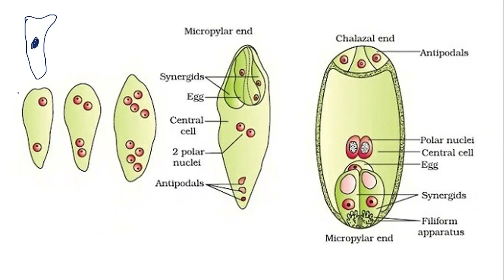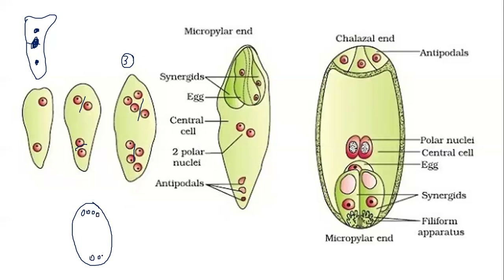Only one cell out of 4 becomes functional. That cell undergoes mitosis to form 2 cells, then divides again to form 4, then 4 divides to form 8. If this is the embryo sac, there will be 4 cells in the micropylar region and 4 cells in the chalazal region. One cell from the micropylar region and one cell from the chalazal region migrate towards the center to form the central cell.